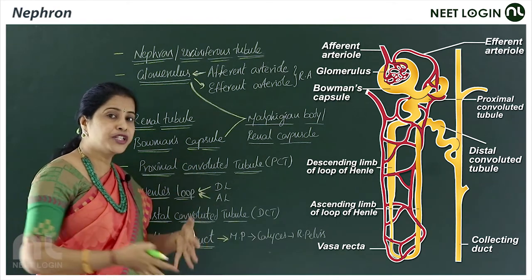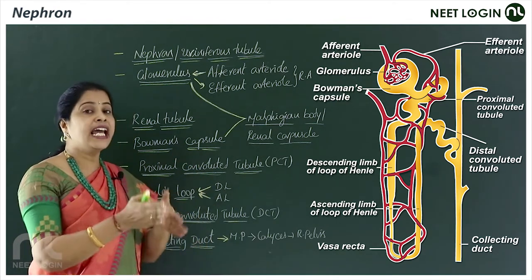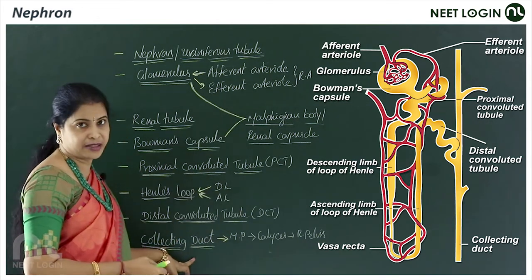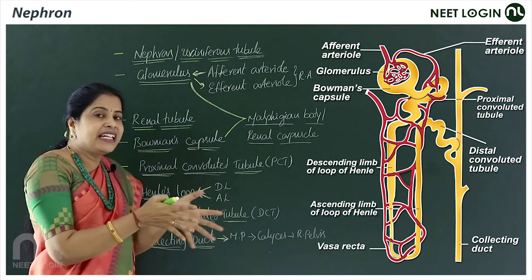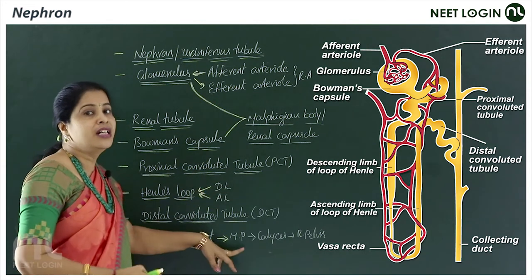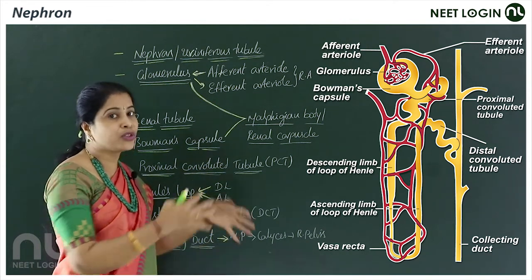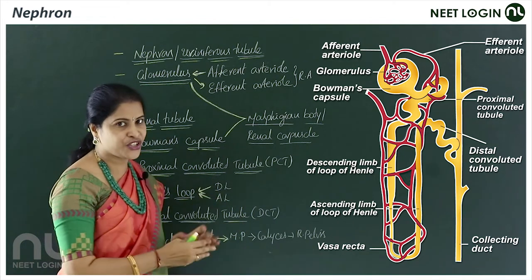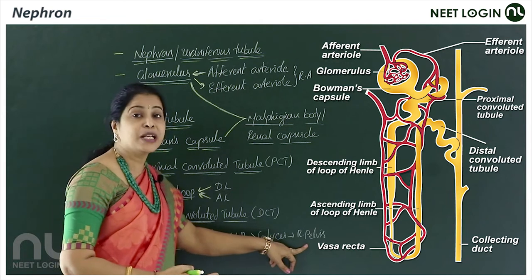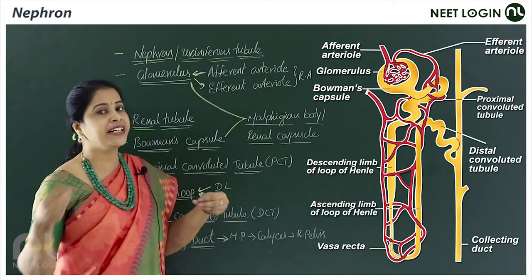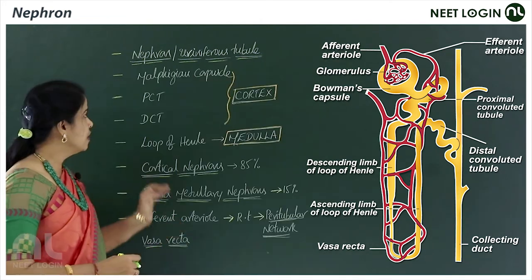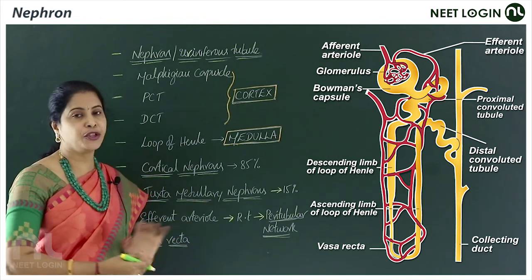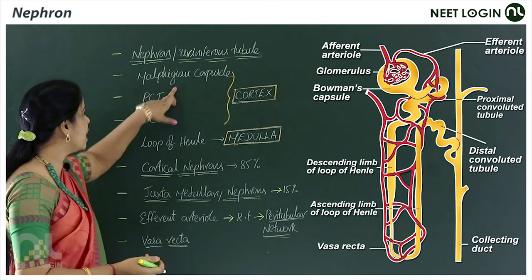Several distal convoluted tubules open into a straight tube called the collecting duct. Several collecting ducts open into the renal pyramids, which open into the calyces, which lead into the renal pelvis, so that waste can be carried away by the ureter.